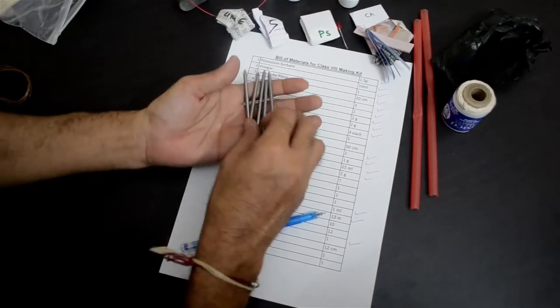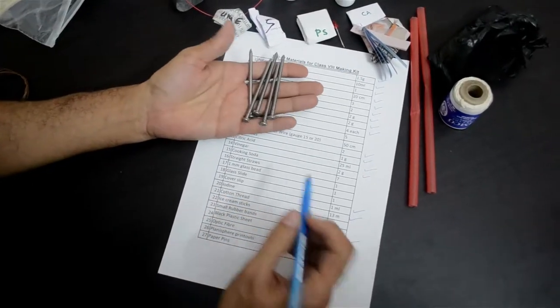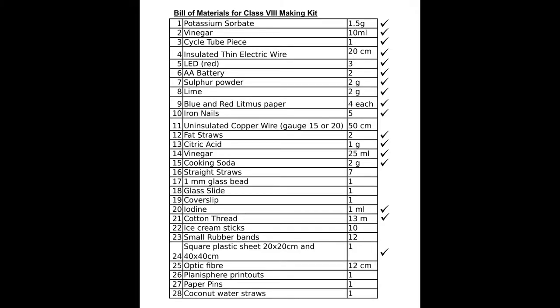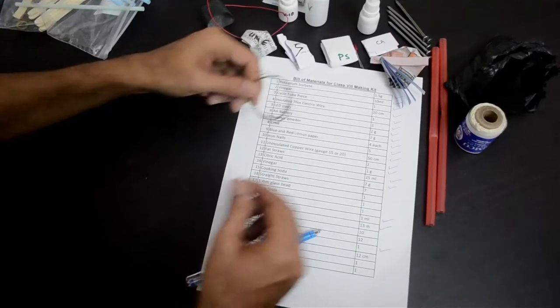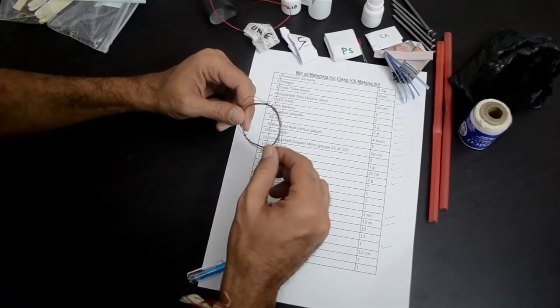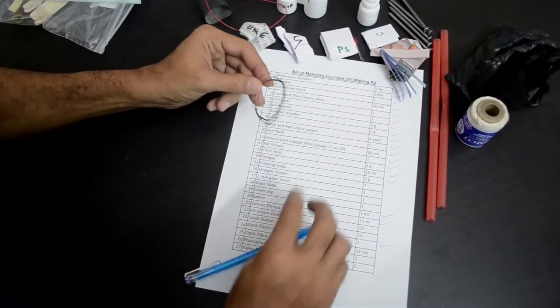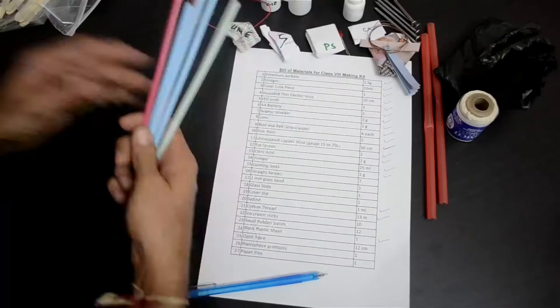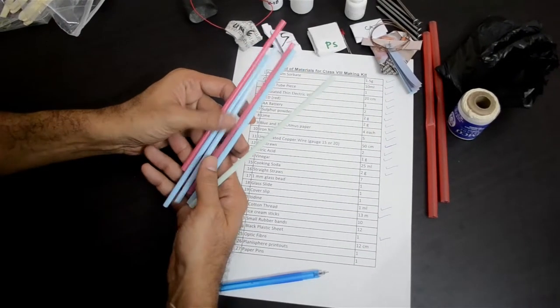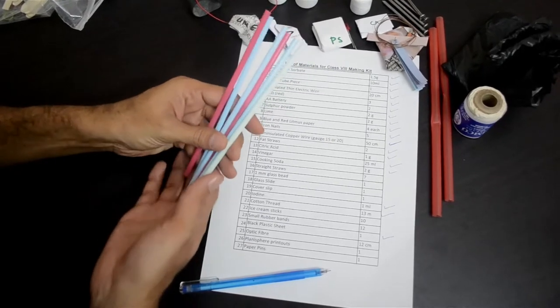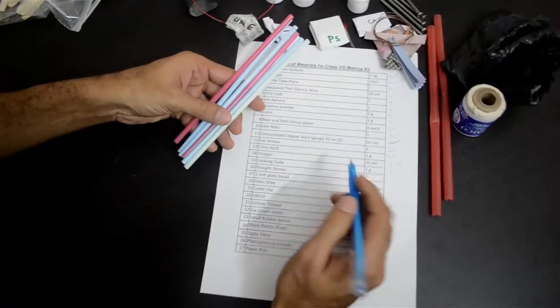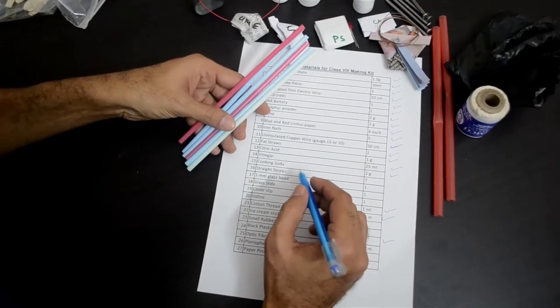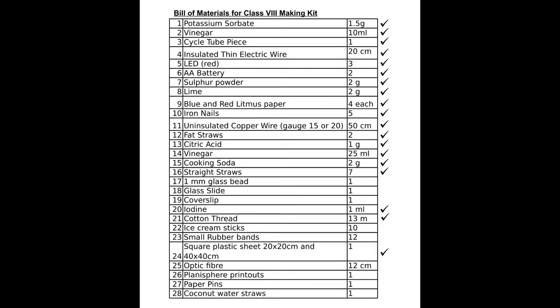There are 5 nails. You will require this for making your own battery. That's item number 10 in our list. That's uninsulated copper wire gauge 20. You will need this for making the battery. That's item number 11 in our bill of materials. Some straight straws. You will need this for the straw oboe activity and the climbing butterfly activity. So that's item number 16 in our list.